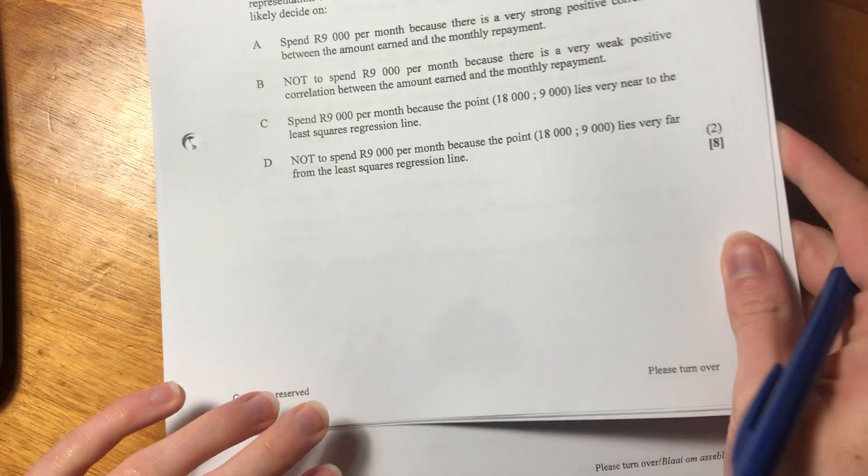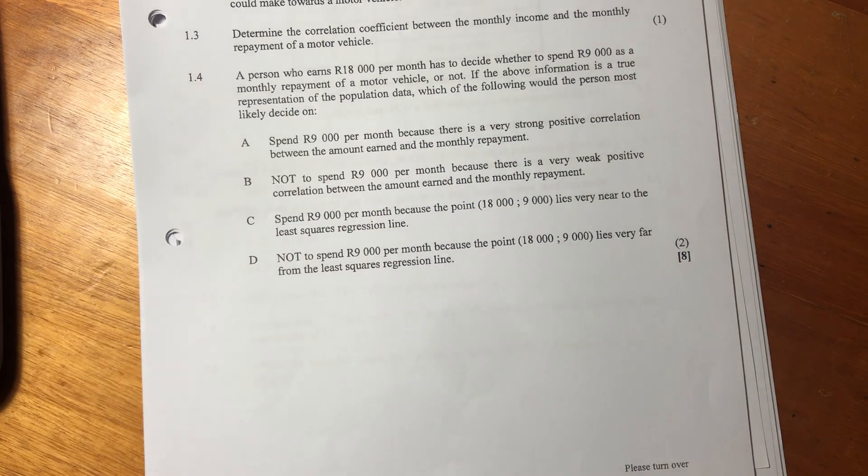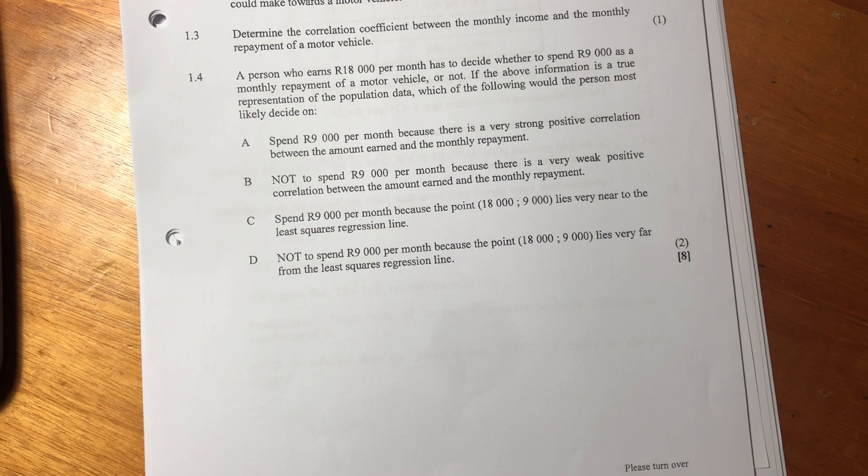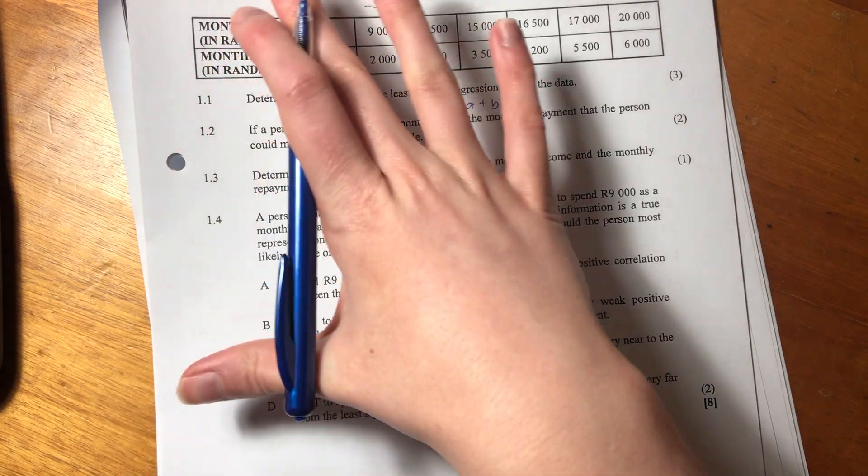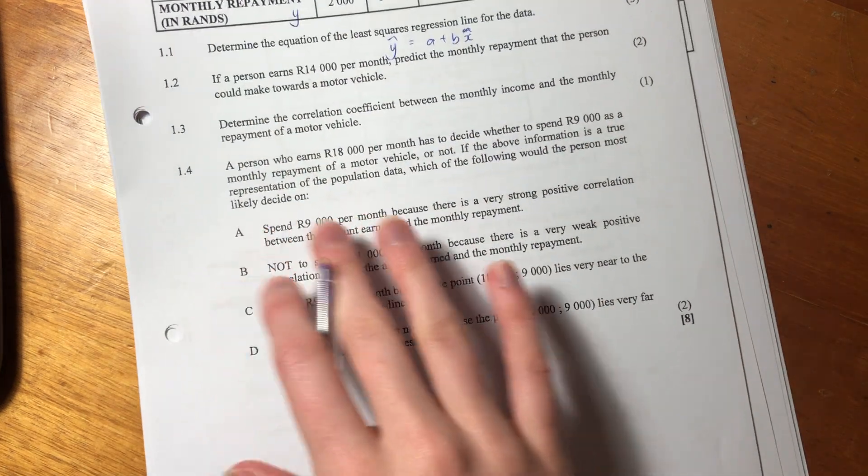Now, let's go to the last question of this question. It says, a person who earns 18,000 Rand per month has decided, has to decide whether to spend 9,000 Rand as a monthly repayment of a motor vehicle or not. So they basically, they want to spend half of their income on a car. That's crazy. If the above information is a true representation of the population data, which of the following would the person most likely decide on? So we have to basically, they're saying, based on the stats you've had here, based on what you've drawn from these stats, should they be doing this or should they not be doing this? So let's read our options.